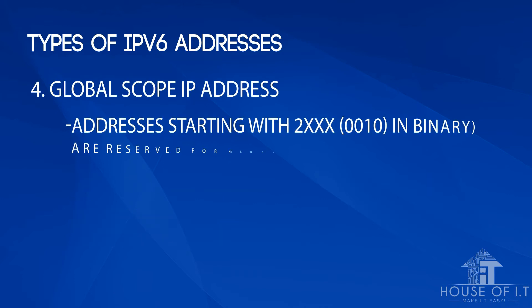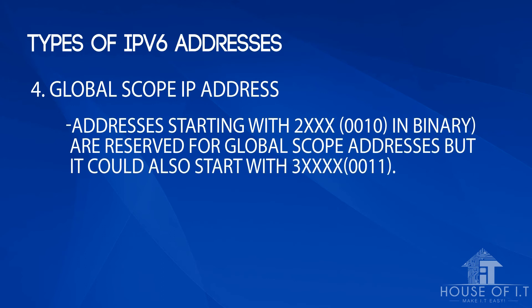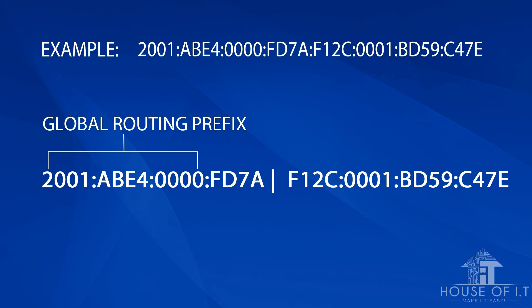The last type of IPv6 address is the global scope IP address — the IPv6 equivalent of a public IP. These are internet-routable addresses and can be used by websites or any host on the internet. Addresses starting with 2 and 3 are reserved for global scope addresses. There is also the global routing prefix, which is part of the global scope. It is the first 48 or fewer bits in the address and is the network ID used for routing. These addresses are usually given to ISPs, large organizations, and government organizations, who then divide them within their network.